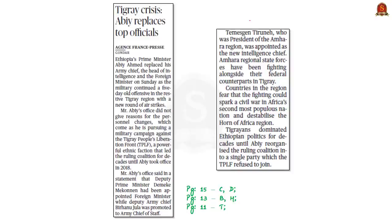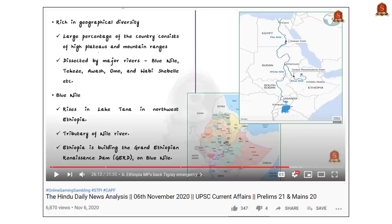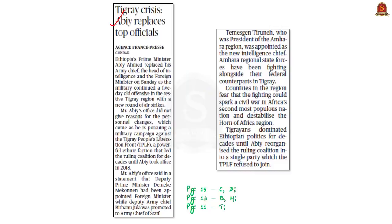This news article is about Ethiopia. In our 6th November Hindu News Analysis, we discussed how Ethiopian MPs backed the Tigray emergency. Ethiopia's Prime Minister Abiy Ahmed replaced his army chief, head of intelligence, and foreign minister. There are speculations this crisis could erupt into a civil war. Tigrayans dominated Ethiopian politics for decades, but the Tigray People's Liberation Front refused to join the ruling coalition under Abiy Ahmed, and since then the crisis has brewed. Expect more news articles and editorials on this crisis in the days to come.